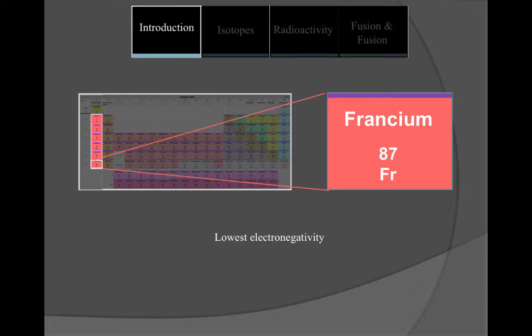Located on the lower left side of the periodic table, francium has the lowest electronegativity and electron affinity compared to the rest of the elements.